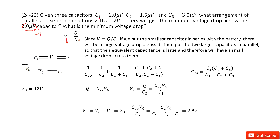To increase the capacitance in the circuit, we can consider parallel connections — parallel connection just adds two capacitances together. We choose C3 because C3 is larger than C2, so C1 plus C3 is maximum. Therefore, C1 and C3 should be connected in parallel.